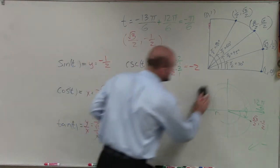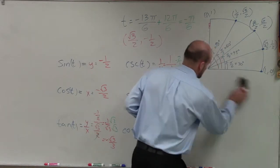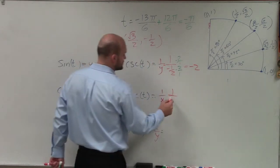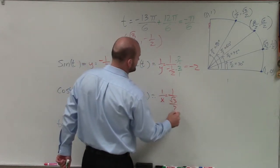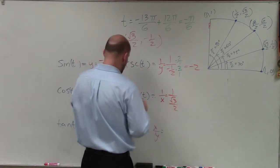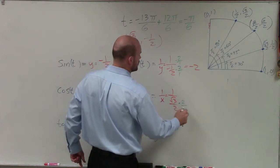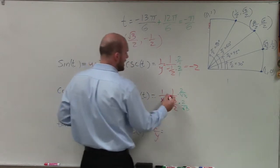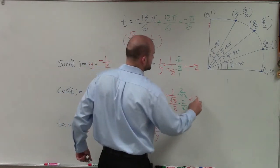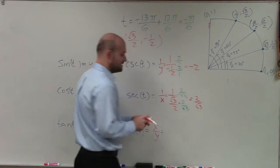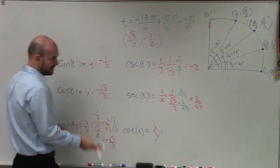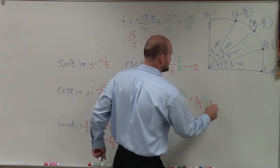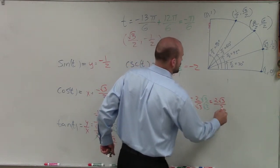For the secant, I'm going to have to get some more space here because I know that's going to take a little while. So I have 1 over my x-coordinate, which is square root of 3 over 2. Now I multiply by the reciprocal. So that's going to be 2 over the square root of 3. That multiplies into 1. So I'm left with 2 over the square root of 3. Now I need to rationalize the denominator, like I did over here. So I multiply by the square root of 3 on the top and the bottom. And I'm left with 2 square root of 3 over 3.